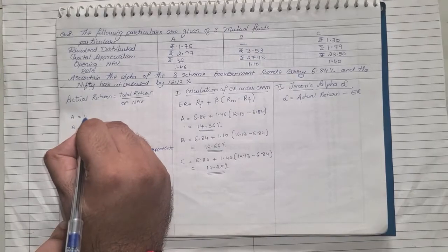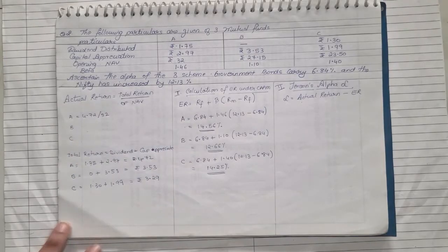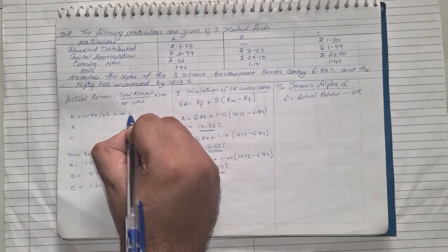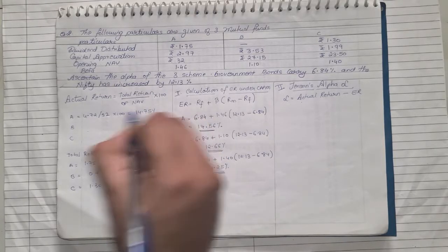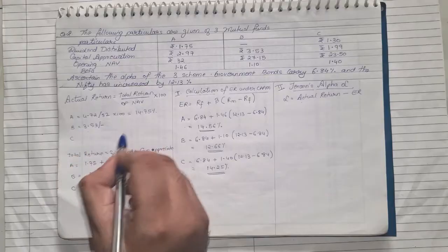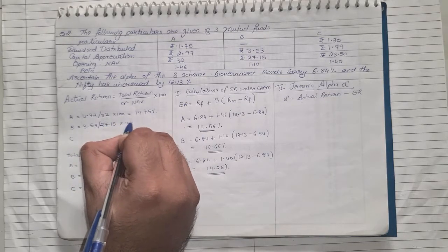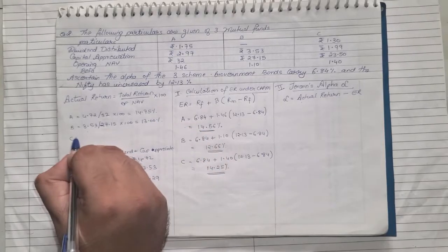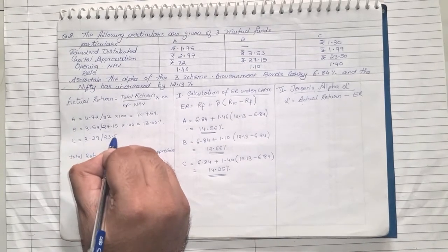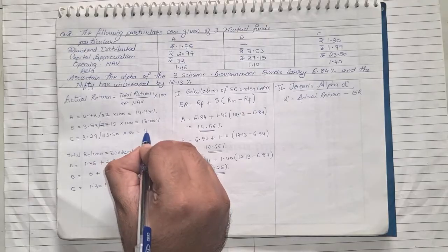Okay, and opening NAVs are given to us directly, so that's not an issue. So for A now, let us see the actual return: total return that is 4.72 divided by opening NAV that was 32.00 into 100, so the value will come to 14.75 percent. Same way for B, it will be 3.53 divided by the opening NAV is 27.15, into 100, return will come to around 13 percent. And for C it was 3.29 divided by 23.50 into 100, which will come to around 14 percent.